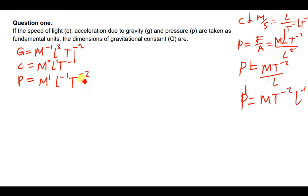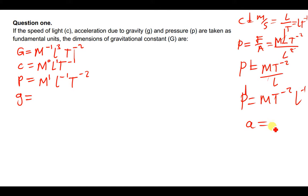For gravity: gravity is just the same as acceleration, so the dimensions for gravity are M⁰·L¹·T⁻². Now that we have found all the dimensions, let us make the assumption that G equals C^x times g^y times P^z.